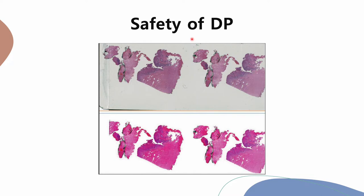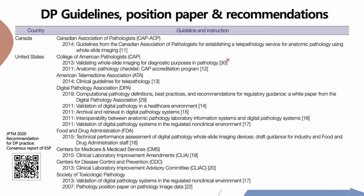You might ask if DP is really safe, trustworthy, and useful for daily practice. This image shows a limitation of present scanning technology. While we can easily see certain features under the microscope, most scanners cannot generate tissue images outside the cover slides, even though we can easily spot the mistake by comparing serial tissue.